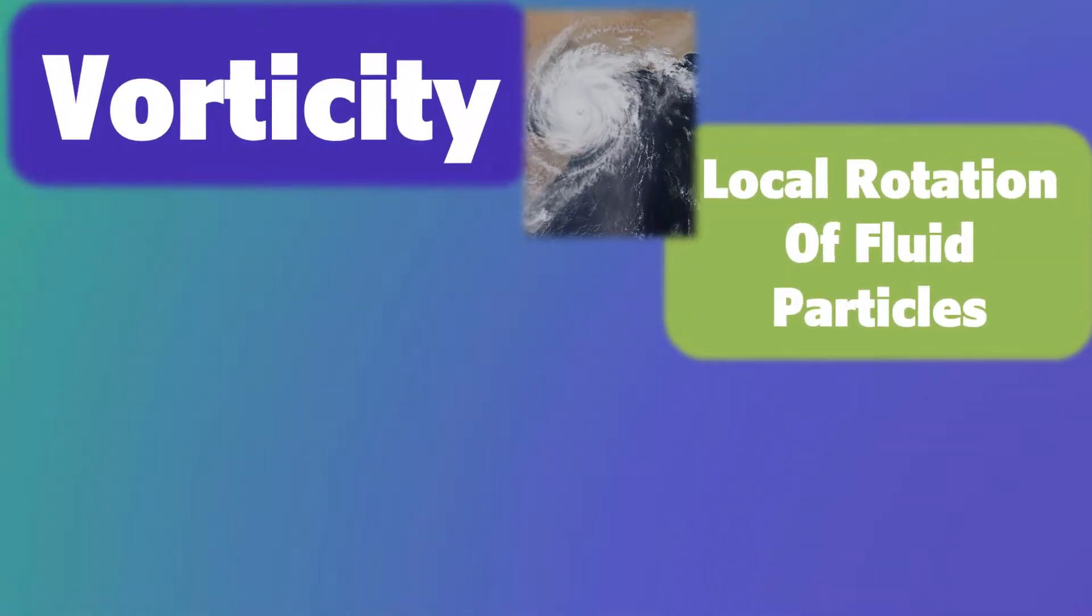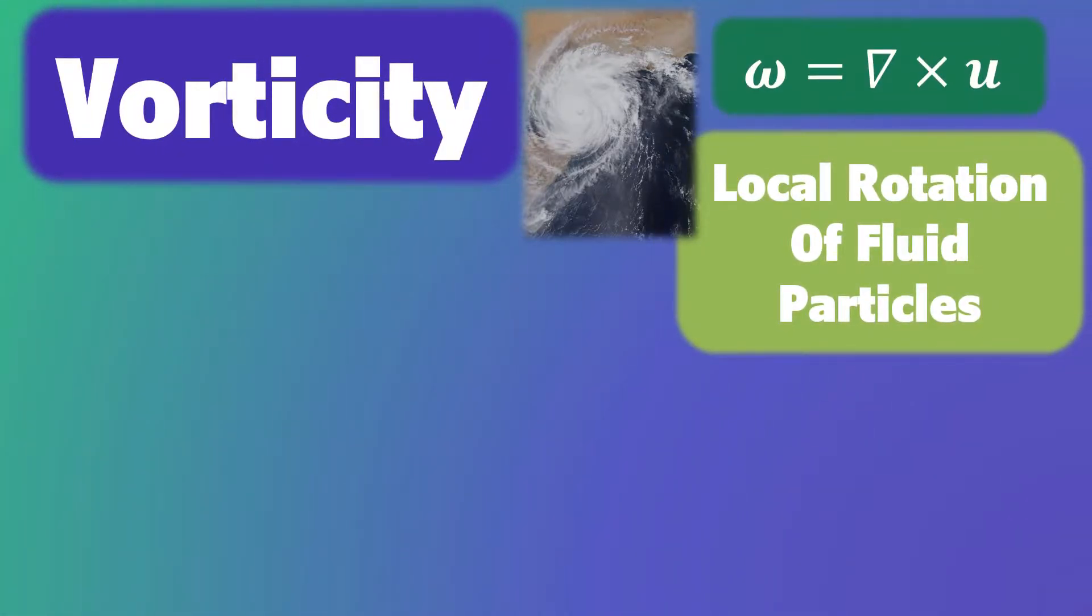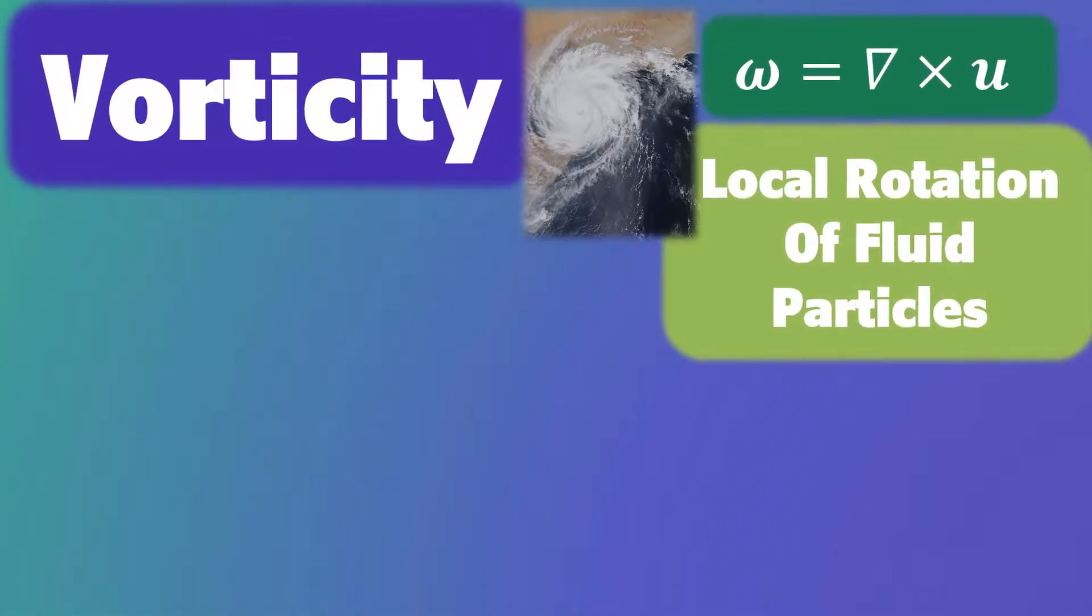It is a measure of local rotation of fluid particles in a flow. Mathematically, we say that omega equals the curl of U,